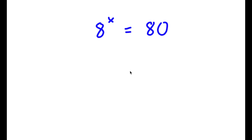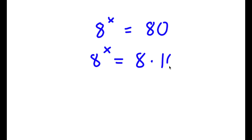In this problem I have 8 to the power of x is equal to 80. I'm going to first start by rewriting 80 as 8 times 10, so I have 8 to the power of x is equal to 8 times 10.